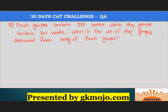Let's look at the next question. Fresh grapes contain 90 percent water while dry grapes contain 20 percent water. What is the weight of dry grapes obtained from 20 kg of fresh grapes? Fresh grapes have 90 percent water, so 10 percent is dry material. Consider a hypothetical 100 kg of fresh grapes — 90 kg would be water.